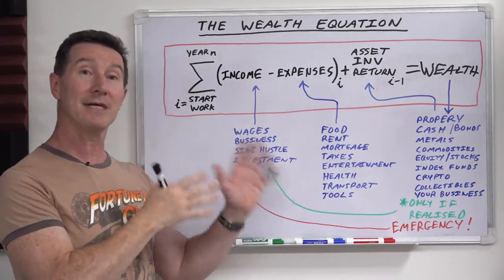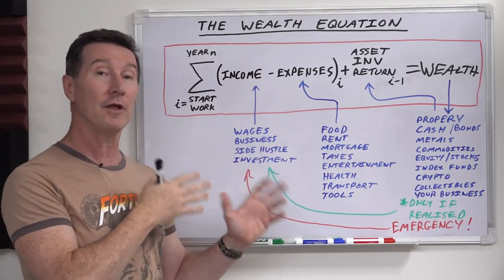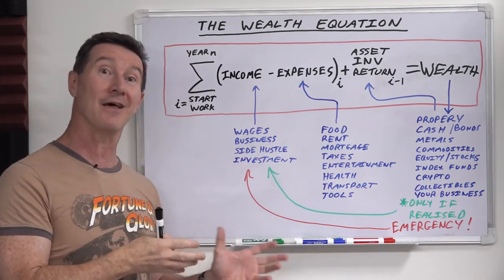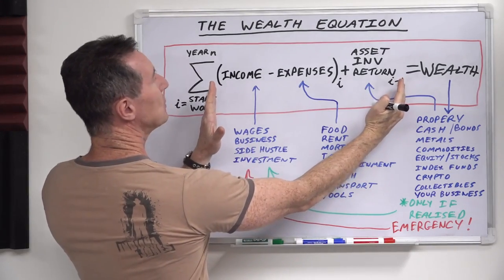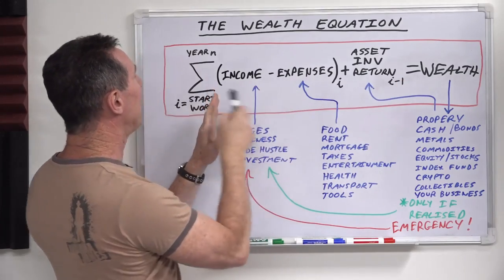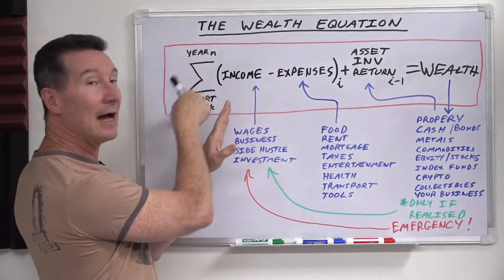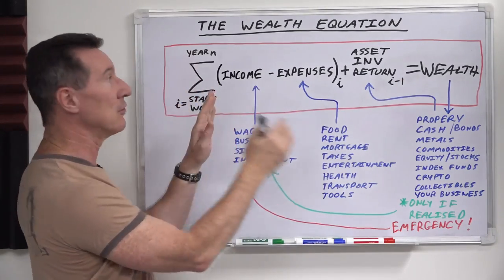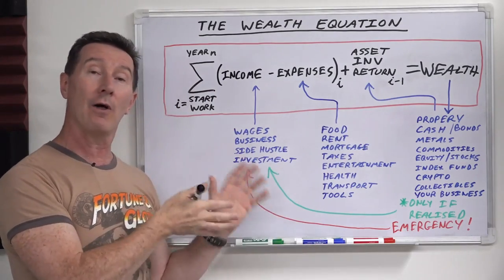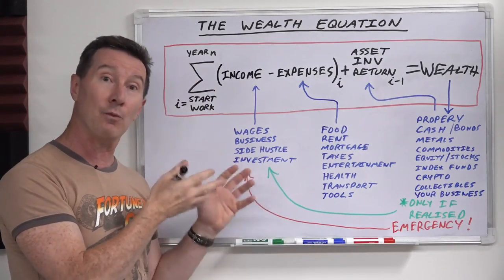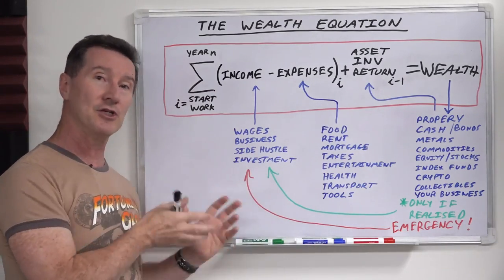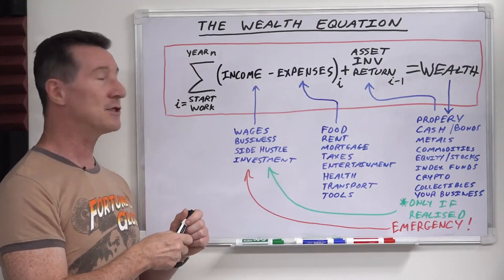By the time you start work or start getting income, to year end — whatever that is, it can be 10, 20, 30, 40, 50, 60 years down the track. This part of the equation just keeps adding up. Every year we go through this loop and add this up. At the end of this I'll actually go through a working spreadsheet with you to show you how this works.